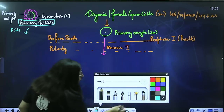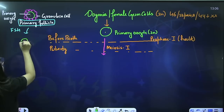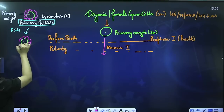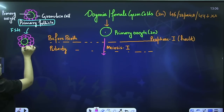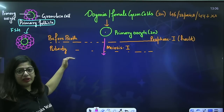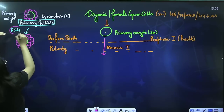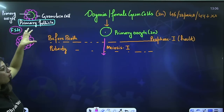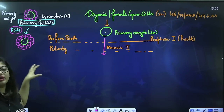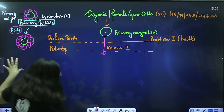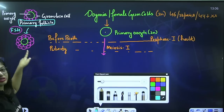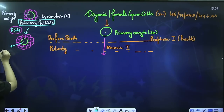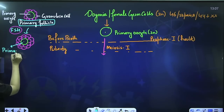FSH comes and leads to the development of the primary follicle, converting it into a secondary follicle. So when she hits puberty, the level of FSH in her blood starts stimulating the primary follicle to mature and convert into a secondary follicle. This secondary follicle has more granulosa cells and still has the primary oocyte inside it.